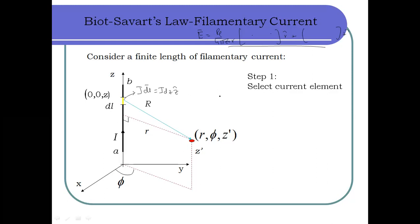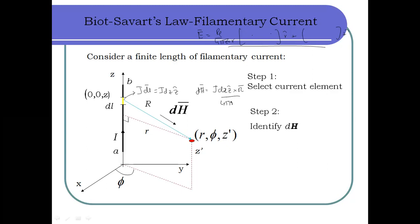Step 2 is to find DH — the small amount of magnetic field intensity produced by this element of current. DH can be written as IDZ ẑ cross product with the vector R, divided by 4πR³. The vector R is directed from the element of current to the point of interest.